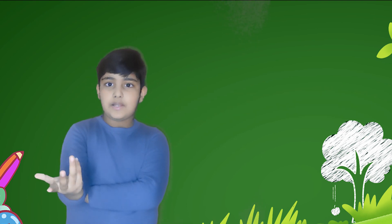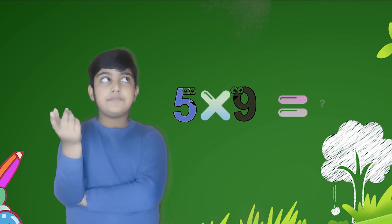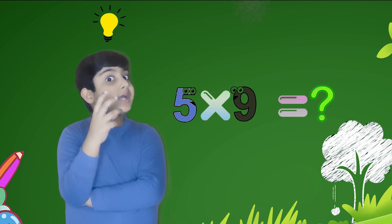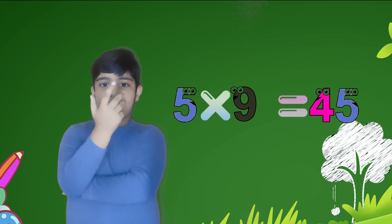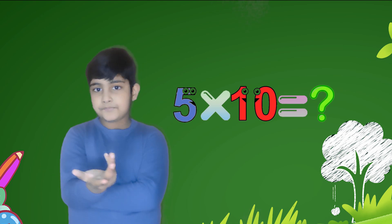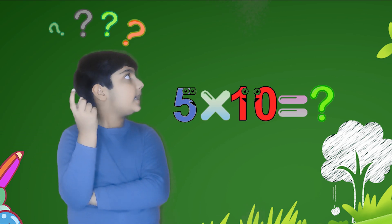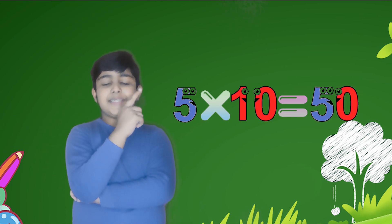Five nines are forty-five, five tens are fifty.